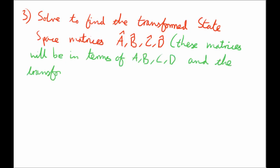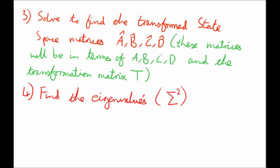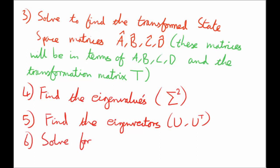And to find the transformation matrix T, which is what we are trying to find at the end of the day. At four, we find the eigenvalues, which is sigma squared. It doesn't make any sense now until I show you. Five, to find the eigenvectors, U and U transpose. Six, to solve for the transformation matrix T.